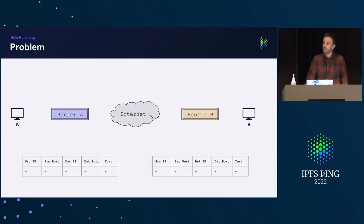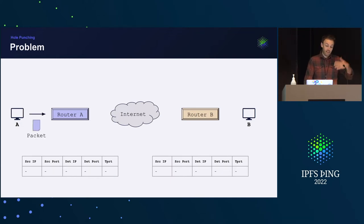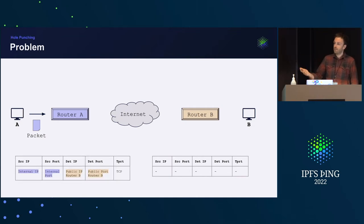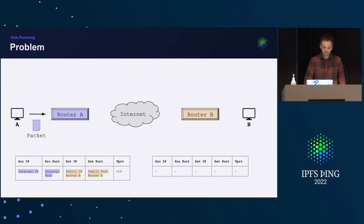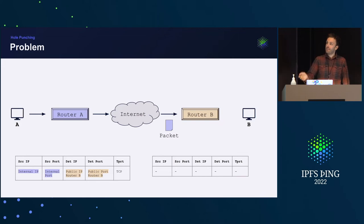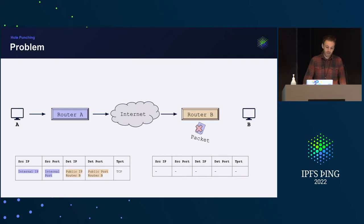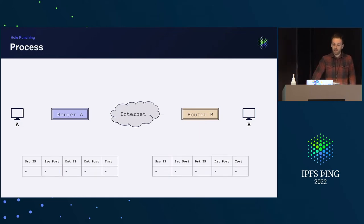One of the simplest firewall rules is: only let packets in if a packet previously left the network. So what's the problem in peer-to-peer networks? If peer A sends a SYN packet to peer B, it reaches router A, which updates its state table. The packet is routed to router B, but router B sees it hasn't sent anything out previously and drops the packet. We cannot connect.